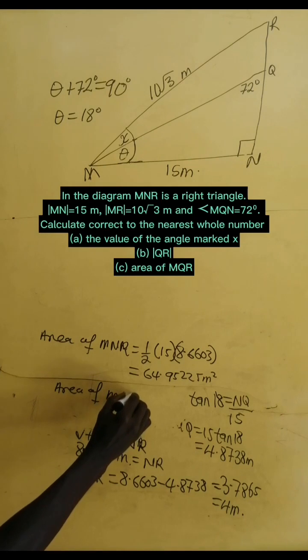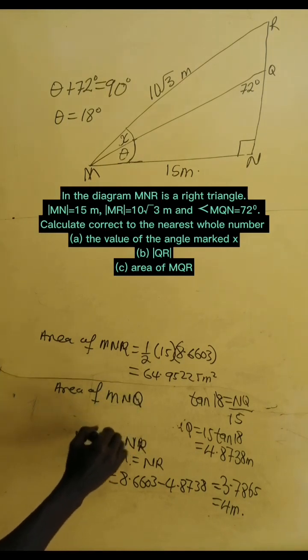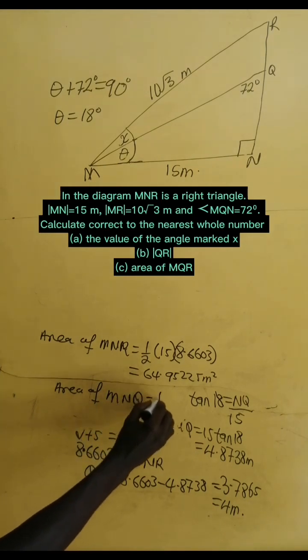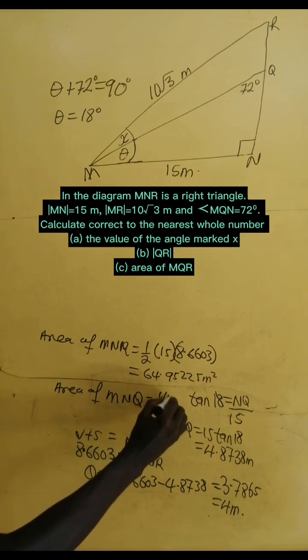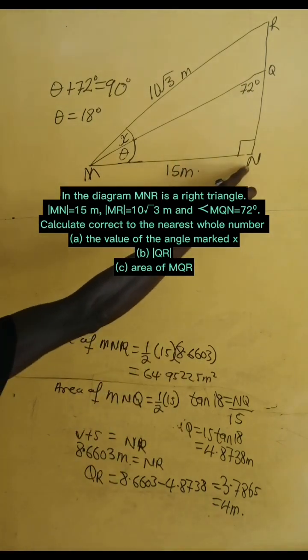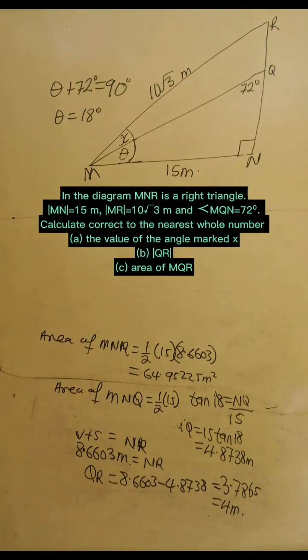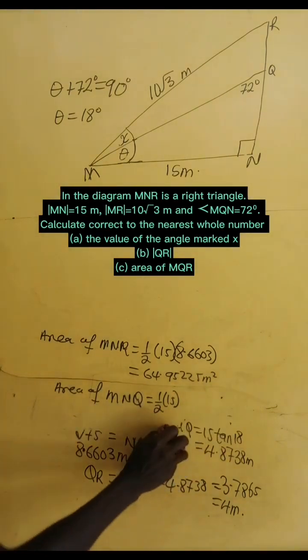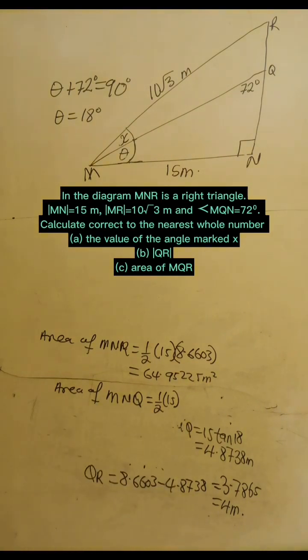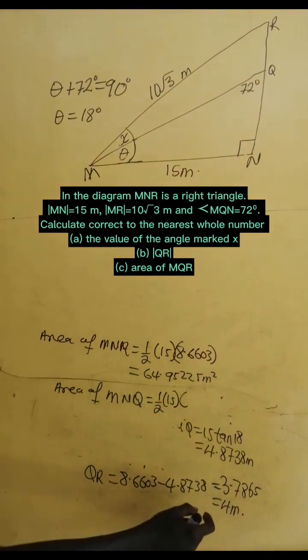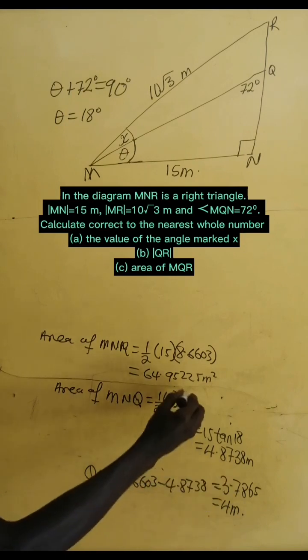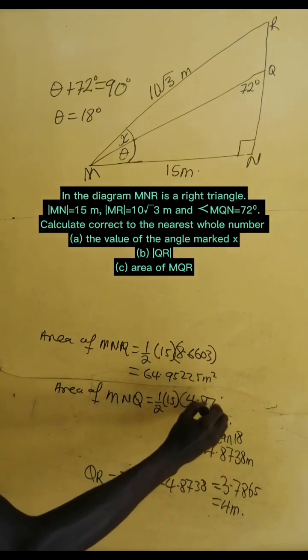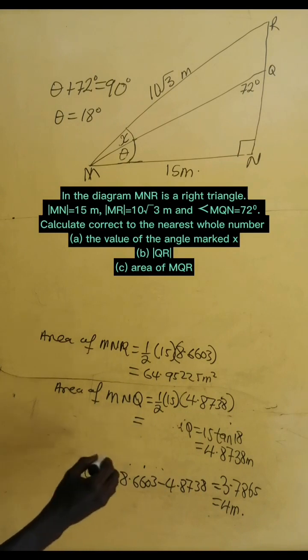And then, let's find the area of MNQ, which is half times base times perpendicular height. So, that one is half of the base is 15 and the perpendicular height is NQ. And we have NQ to be 4.8738.